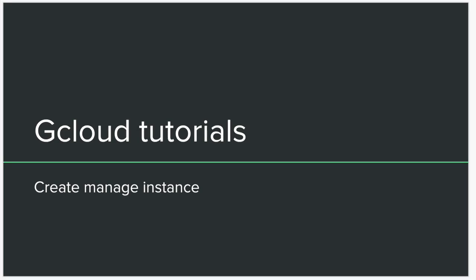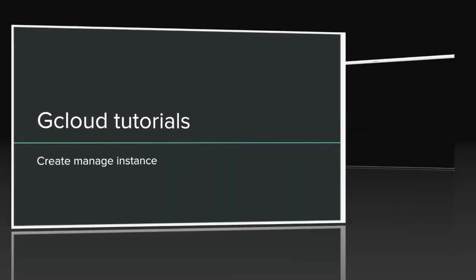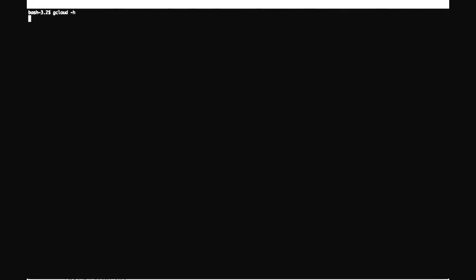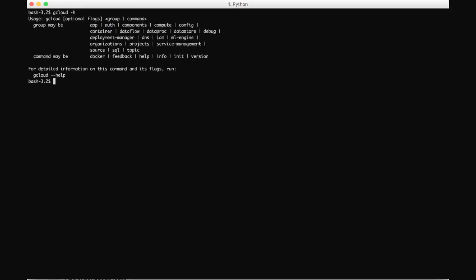Let's start with the gcloud command — just type hyphen-h for the options. It will tell you how many options are available.